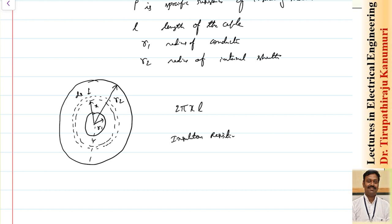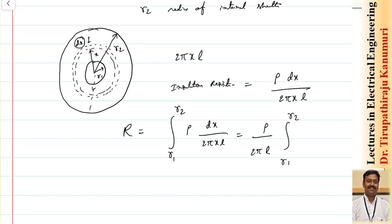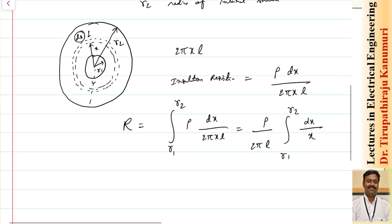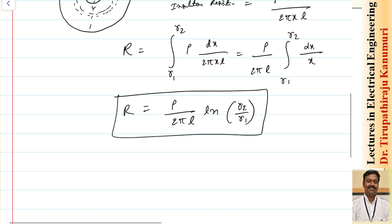The insulation resistance of this small layer dx is equal to rho times dx divided by the area 2πxL, using the formula R = ρL/A. The total insulation resistance is obtained by integrating from R1 to R2: R equals rho over 2πL times the integral of dx/x, which gives R = ρ/(2πL) · ln(R2/R1).